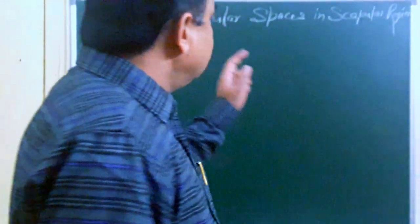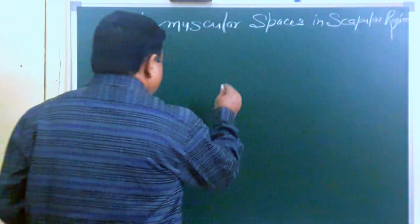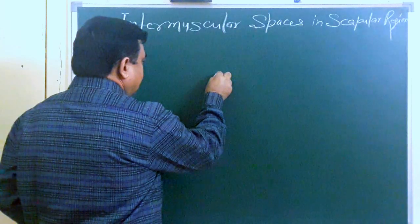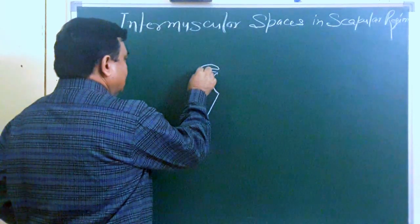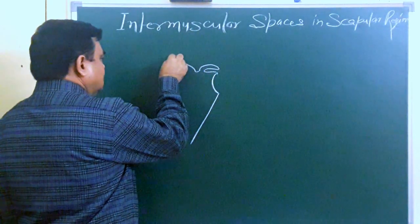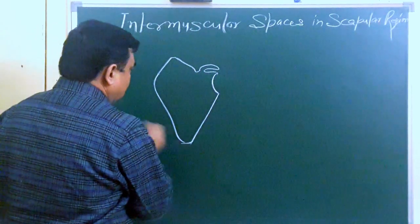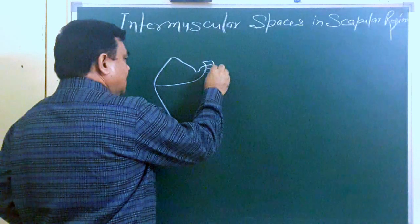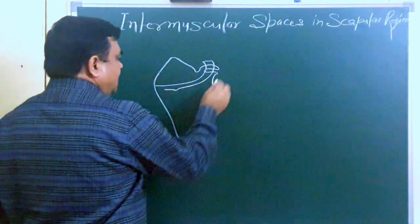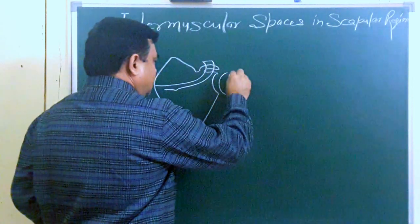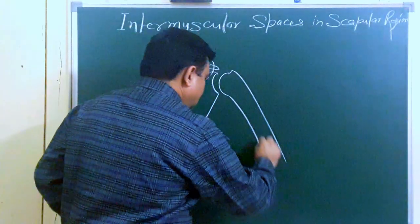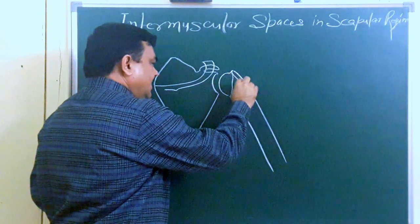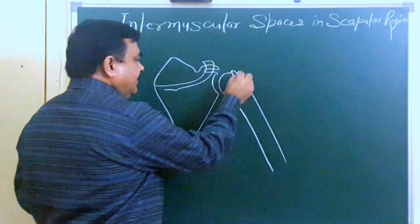Now we will discuss about the intermuscular spaces in the scapular region. This is the scapula, here is the dorsal surface of the scapula, here is the acromion process, this is the coracoid process, here is the head of the humerus, this is the humerus. Here is the anatomical neck, and this is the greater tubercle.